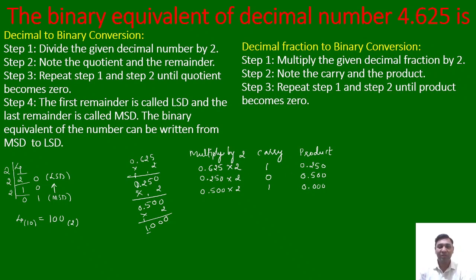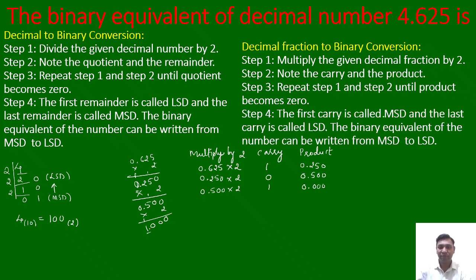In some fractional conversions you may not get the product equal to 0 even after multiplying by 2 several times. In that case you can round it off — after 3 or 4 digits you can stop. Next, step 4 says the first carry is called the most significant digit and the last carry is called the least significant digit. The binary equivalent is written from MSD to LSD, which is from top to bottom — exactly opposite to the decimal to binary conversion.